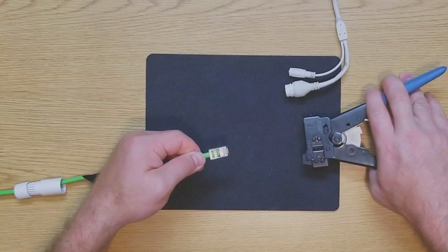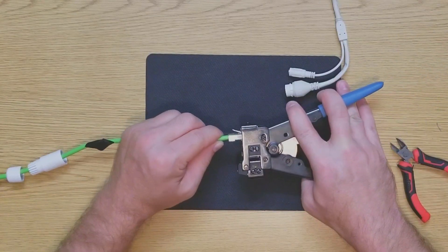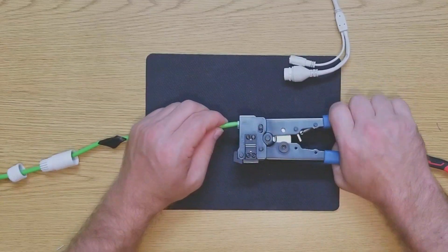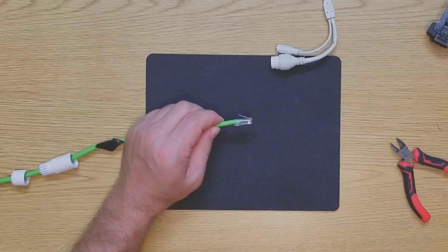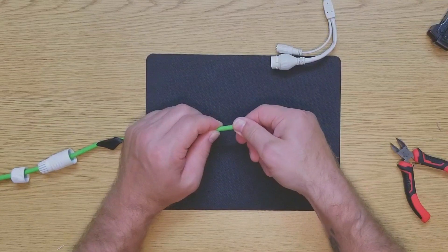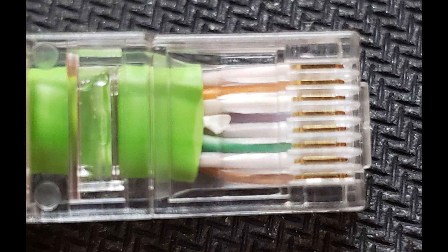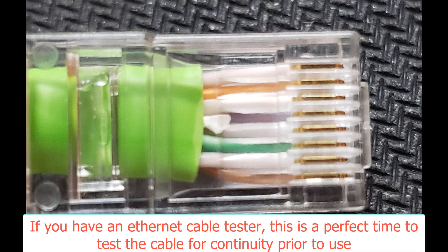Then you can place the connector into your crimping tool and crimp the wire onto the ethernet cable. Many of the ethernet crimping tools today are really all-in-one - they do insulation removal, trimming of the wires, and crimping of the RJ45 connectors. Let's take a look at our completed connector up close. We can check our wires to make sure they're in the correct order, and if we happen to have an ethernet cable tester, this is a perfect time to test the cable for continuity prior to use.